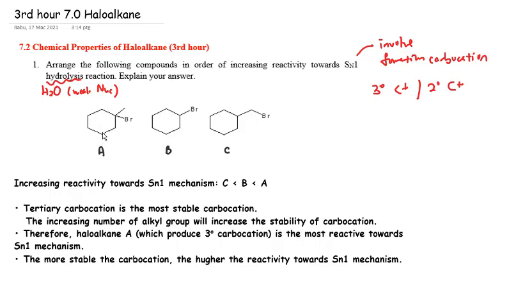Looking at structure A, the carbon directly attached to bromine has three carbon atoms, so structure A is a tertiary haloalkane. For structure B, the carbon attached to Br has two carbon neighbors, so structure B is a secondary haloalkane. For structure C, the carbon attached to Br has only one carbon neighbor, so structure C is a primary haloalkane.